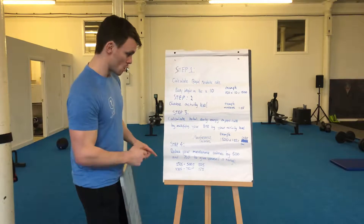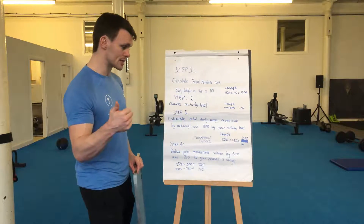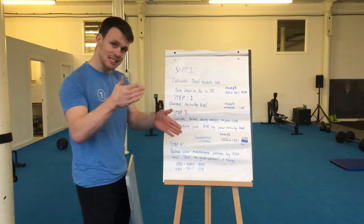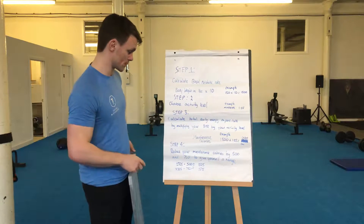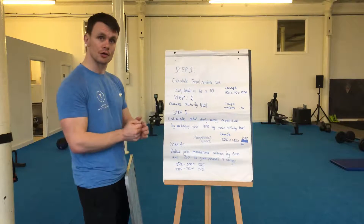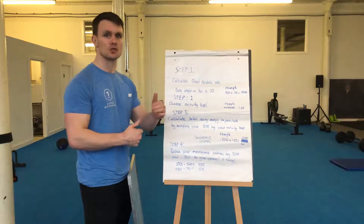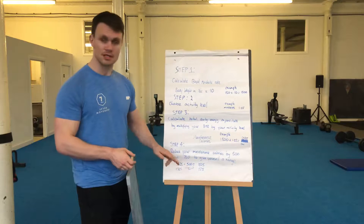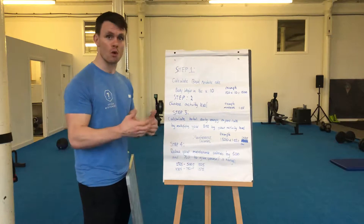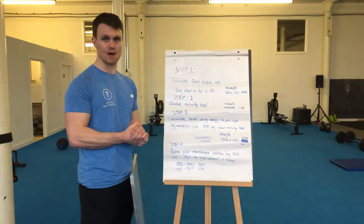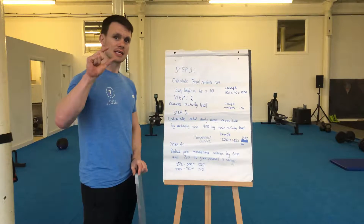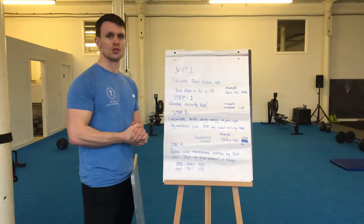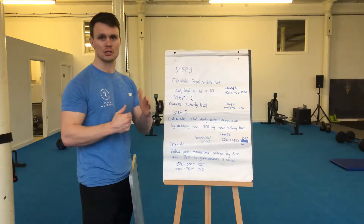The final step is to create your deficit. We reduce calories by 500 and by 750 to give you a range. So 2,325 minus 500 gives us 1,825 calories, and 2,325 minus 750 gives us 1,575 calories. That range — 1,575 to 1,825 — is what you need to hit to ensure you're in a calorie deficit and losing fat.